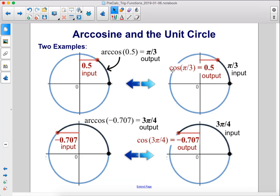Here are two examples. Cosine of π/3 equals 0.5. This is what we're used to writing. We can now write it as arc cosine of 0.5 equals π/3. Here we have cosine 3π/4 equals negative 0.707. Or we could write it arc cosine of negative 0.707 equals 3π/4.